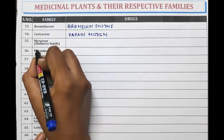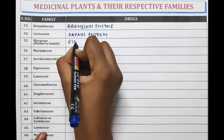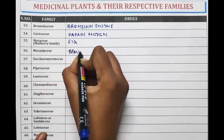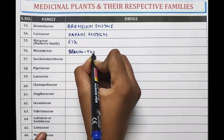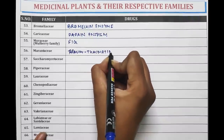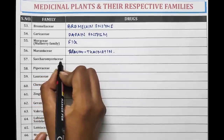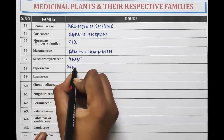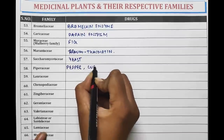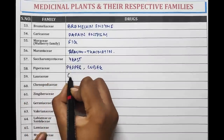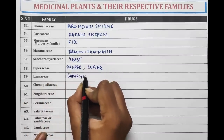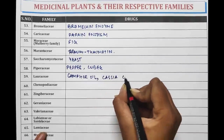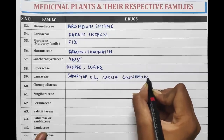Moraceae, also known as the Mulberry family, is the family of Fig. Marantaceae is the family of Thaumatin, which is a type of protein. Saccharomycetaceae is the family of Yeast. Piperaceae is the family of Pepper and Cubeb. Lauraceae is the family of Camphor Oil, Cassia, Cinnamon.